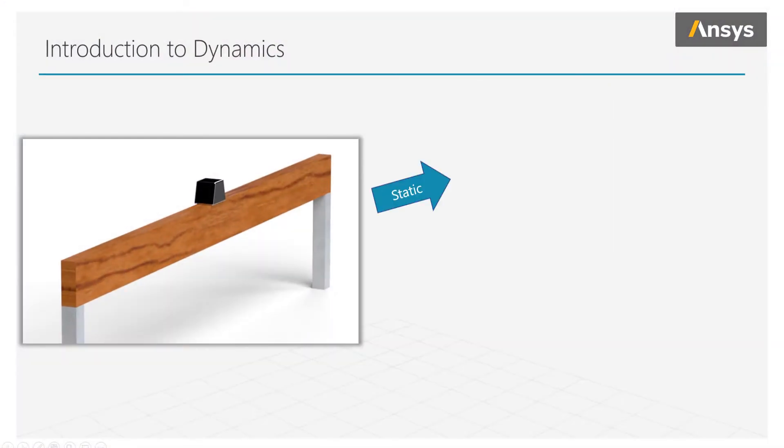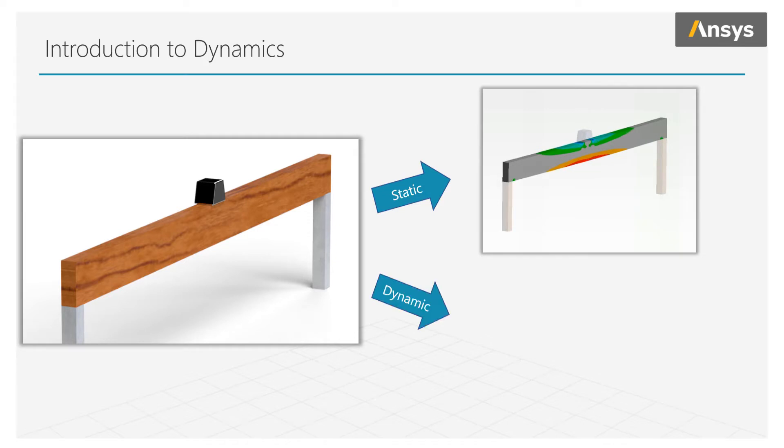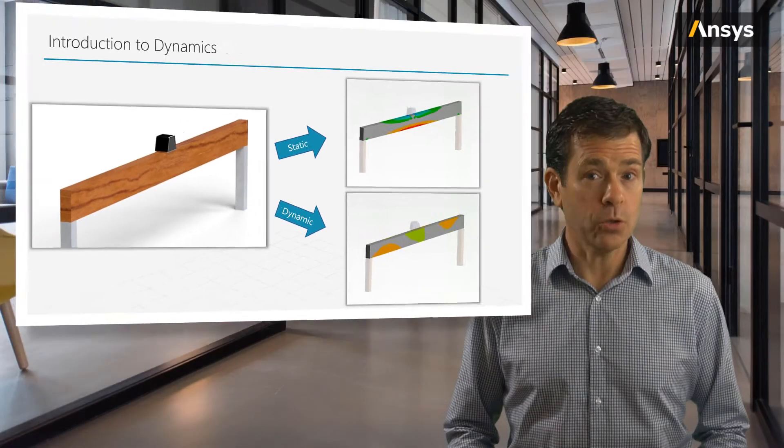Let's take another example. We have a beam with a load on it. Imagine the load is applied slowly to the beam. Here we can use a static analysis. But if we suddenly drop the load on the beam, or wish to know how that load affects the beam during, say, the shaking of an earthquake, all of these are dynamics problems.